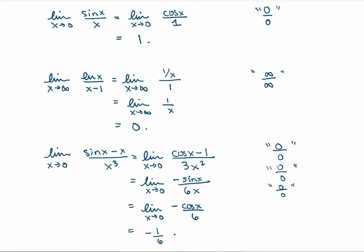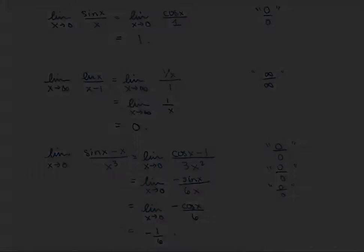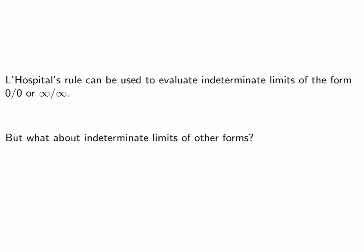L'Hôpital's rule is a very powerful method for dealing with indeterminate limits of the type 0 over 0 and infinity over infinity. But it turns out that there are many more forms of indeterminate limits. So that's what we're going to study next. What about indeterminate limits of other forms? Suppose you have a limit that gives you 0 times infinity. It turns out that the trick is always the same — we somehow want to transform the limit so that we end up with a limit of the type 0 over 0 or infinity over infinity so we can use L'Hôpital's rule.